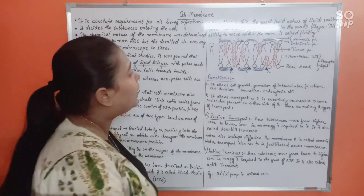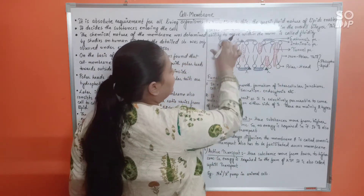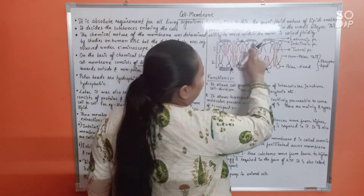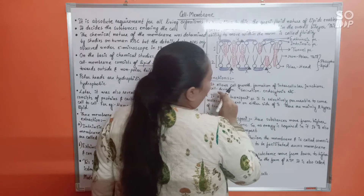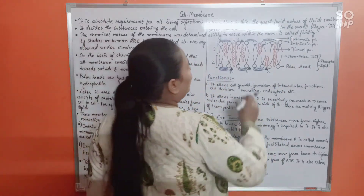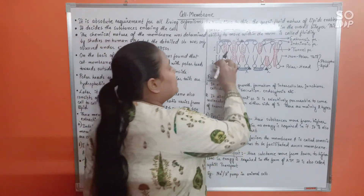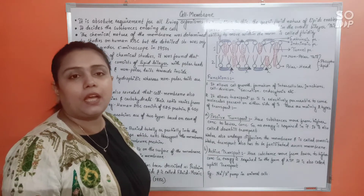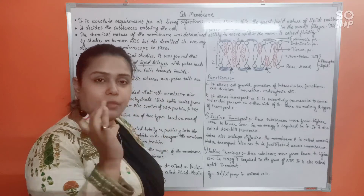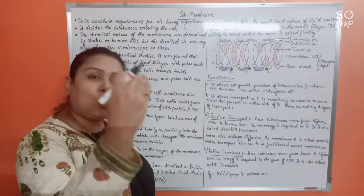The bilayer has polar heads towards the outside and non-polar tails towards the inside. Arranged together, the two phospholipid layers form three distinct layers: one layer of polar heads, then a thick layer of hydrophobic tails, then another layer of polar heads. That's why we also call the plasma membrane a trilamellar membrane — polar, non-polar, polar.